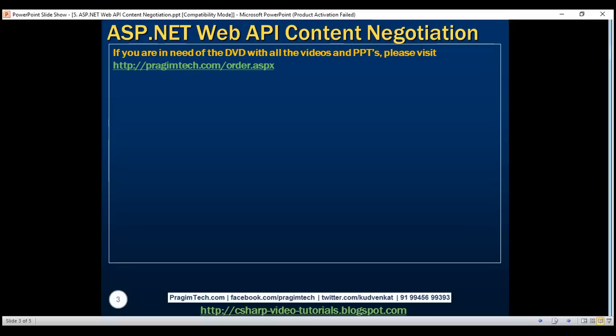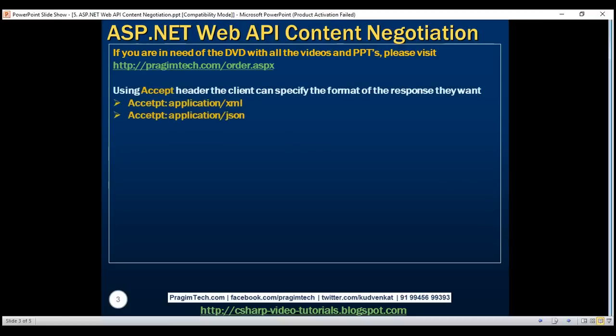When a client sends a request to the server, the request also includes something called an accept header. Using this accept header, the client can specify the format for the response they want from the server. For example, if the accept header is set to application/XML, the server sends the response in XML format. If it is set to application/JSON, then the response format is going to be JSON.